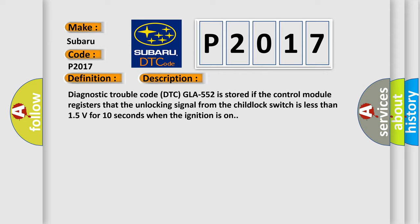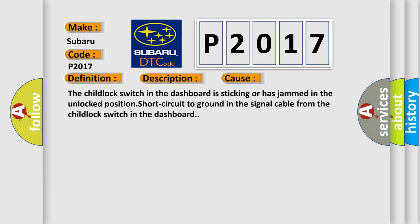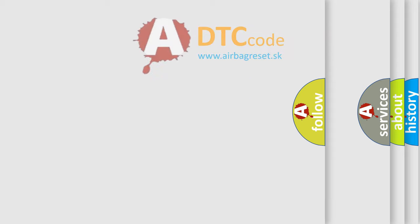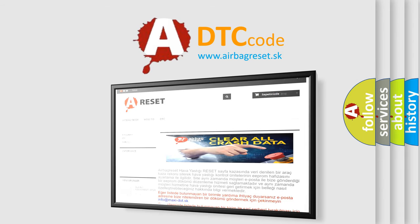This diagnostic error occurs most often in these cases: the child lock switch in the dashboard is sticking or has jammed in the unlocked position, or there is a short circuit to ground in the signal cable from the child lock switch in the dashboard. The airbagreset website aims to provide information in 52 languages. Thank you for your attention and stay tuned for the next video.